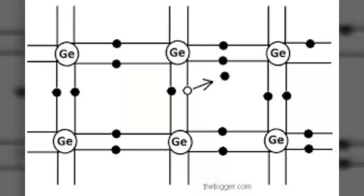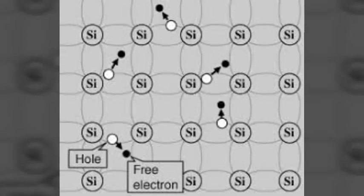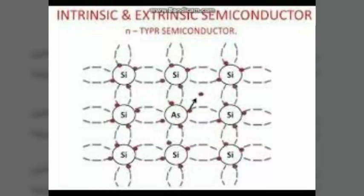The concept of hole current: suppose due to thermal energy an electron leaves the valence band to enter into the conduction band. This leaves a vacancy at L and now the valence electron at M comes to fill the hole at L. The result is that the hole disappears at L and appears at M. Valence electrons move along the path P, M, and L whereas holes move in the opposite direction, along the path L, M, and P. This process is the concept of hole current applied in intrinsic semiconductor.